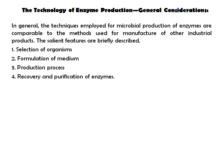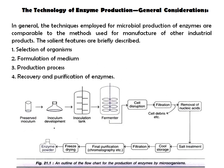The salient features are briefly described. There are four steps involved in enzyme production: first, selection of microorganisms; second, formulation of medium; third, production process; and fourth, recovery and purification of the enzyme.